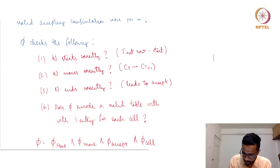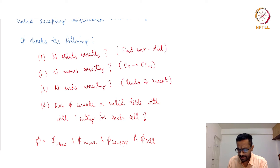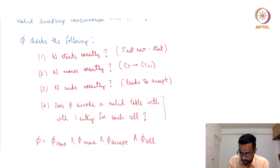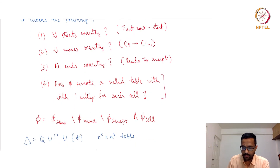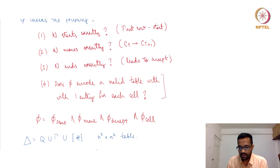There is also a technical condition: does the formula encode a valid table with exactly one entry per cell? Phi is an AND of four sub-formulas: φ_cell checks proper encoding, φ_start checks the starting configuration, φ_accept checks that computation leads to acceptance, and φ_move checks that each row is a valid successor of the previous row.